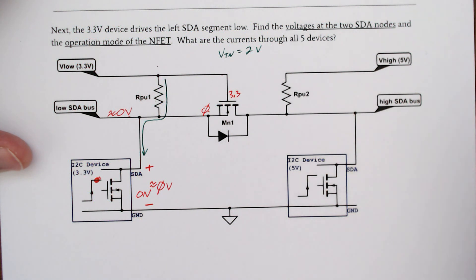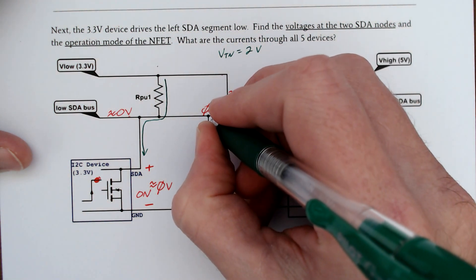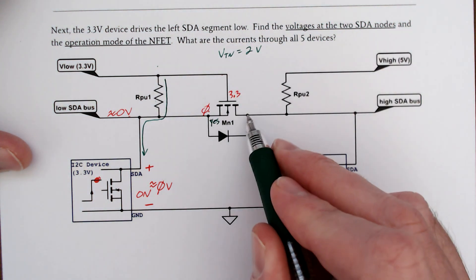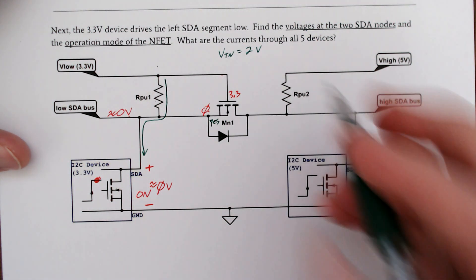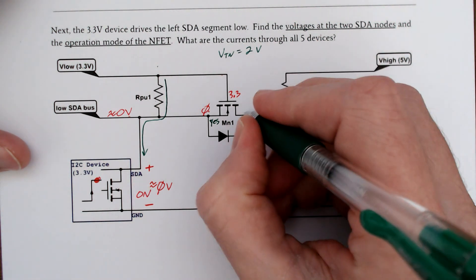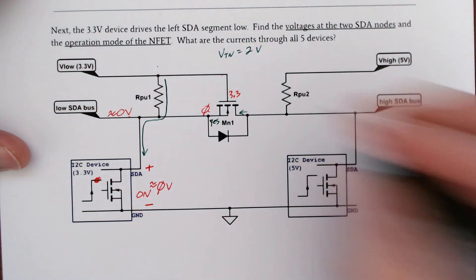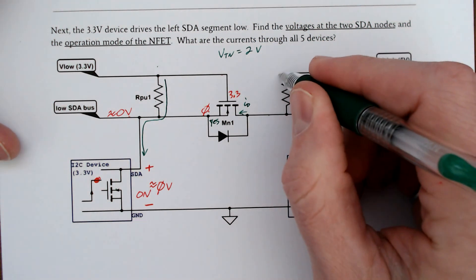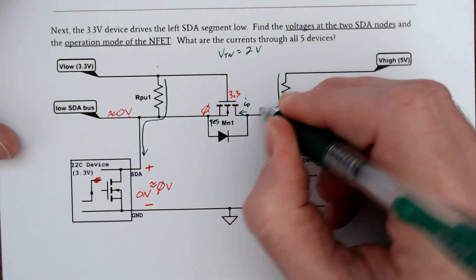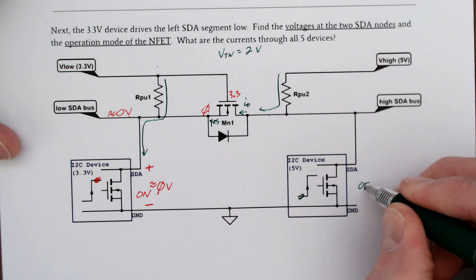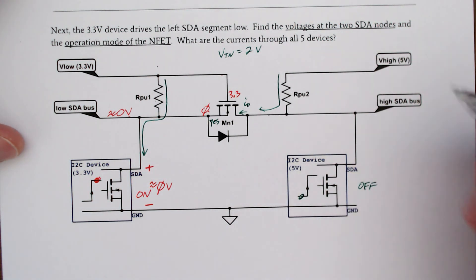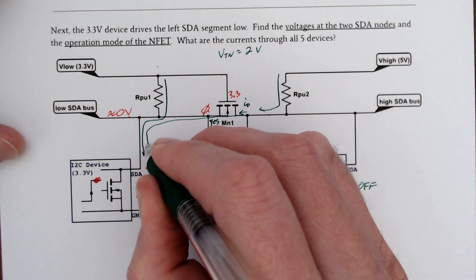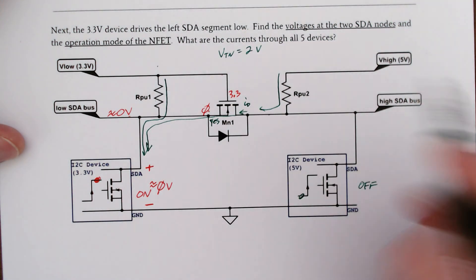Remember our threshold voltage was 2 volts, so our channel, yes, we do have a channel on the left side. Let's look at what happens on the right side. Well we do know we're going to have drain current flowing that way. This right side is going to be 5.